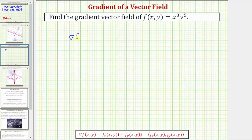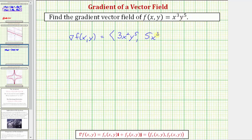So the gradient of f, or del f, is going to be a two-dimensional vector field where the x component is equal to the partial derivative of f with respect to x. We treat y as a constant, so the partial derivative with respect to x is going to be 3x squared, y to the fifth. The y component is equal to the partial derivative of f with respect to y, so now we differentiate with respect to y, treating x as a constant. The derivative is going to be 5x to the third, y to the fourth. So this is the gradient vector field of our function f of x, y.